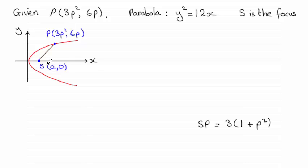We can figure out what a is when we know the form of a parabola. The form of a parabola is always y squared equals 4ax. And clearly from here, we can see that 4a must be 12. So therefore, a must be equal to 3. So the focus then has coordinates 3, 0.